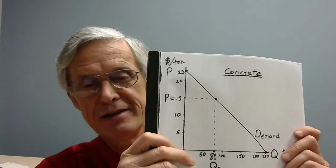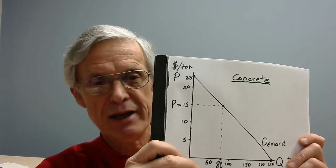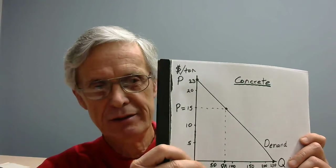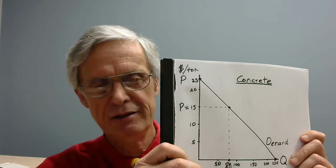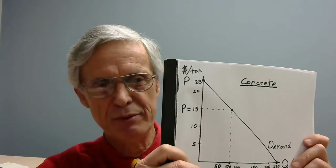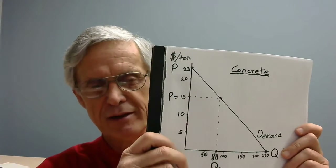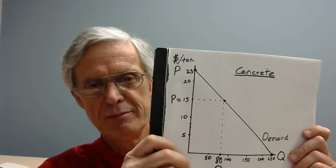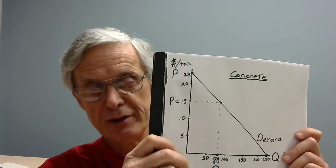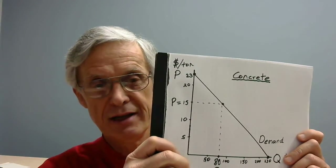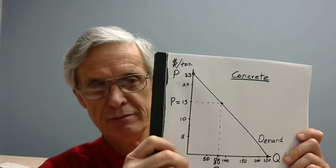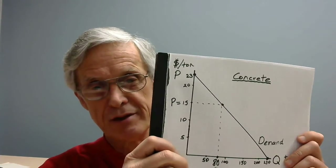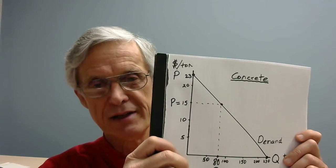Consumer surplus is the difference between what someone values the good at — the basis of demand — and what they actually pay. Buyers like bargains, sellers like profits. Sometimes people have to buy regardless of price and you get a vertical demand line, but in all other cases you get a downward-sloping line indicating at what rate people buy more when the price is lower, and buy less when the price is higher.